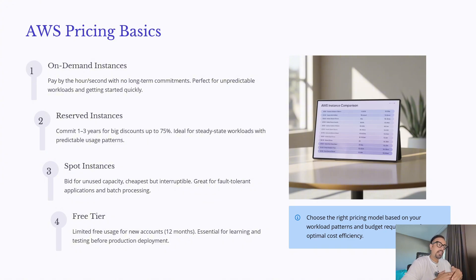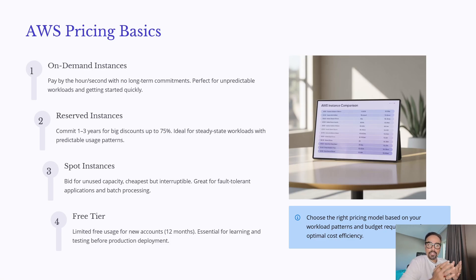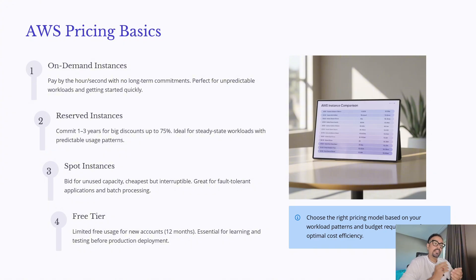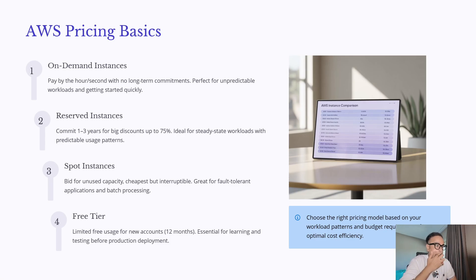Next are reserved instances. With these, you can commit to using resources for one to three years and in return you get massive discounts — sometimes up to 75% off. This option is best when you know your workloads are steady and predictable.